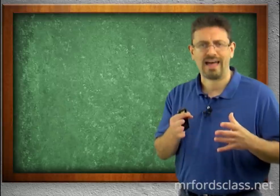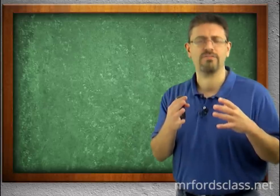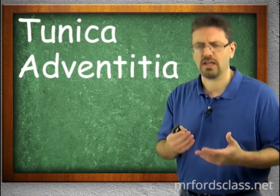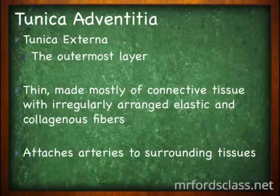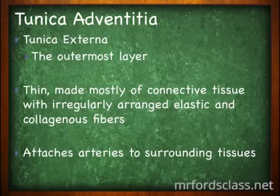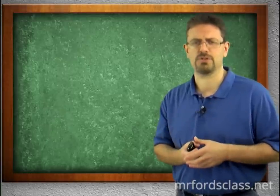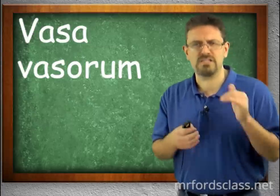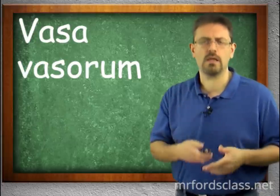The outermost layer is the tunica adventitia, also known as the tunica externa. It is thin, made mostly of connective tissue with irregular arrangements of elastic and collagenous fibers. It attaches the arteries to surrounding tissue so they don't float around. It also contains small vessels known as vasa vasorum, which feed the larger vessels with blood so the arteries don't have to dip into their own supply.